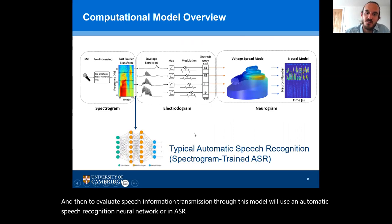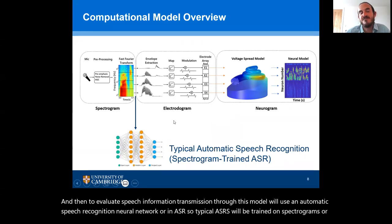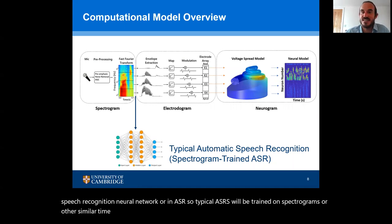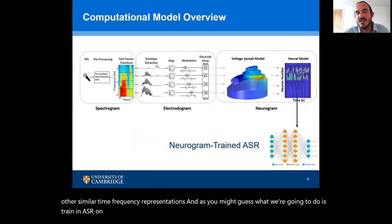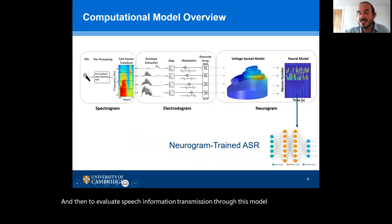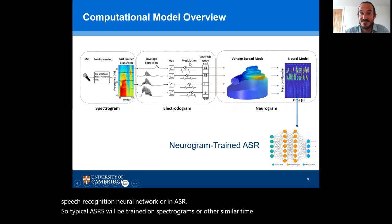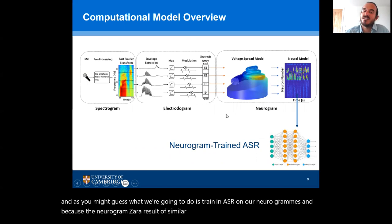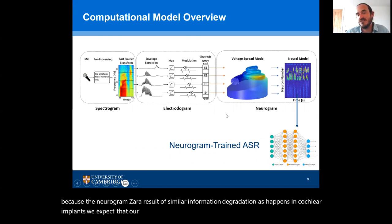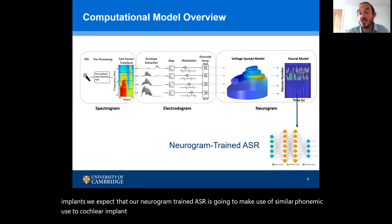Typical ASRs will be trained on spectrograms or other similar time-frequency representations. What we're going to do is train an ASR on our neurograms. Because the neurograms are a result of similar information degradation as happens in cochlear implants, we expect that our neurogram-trained ASR is going to make use of similar phonemic cues to cochlear implant users and perhaps make similar phonemic errors to CI listeners.